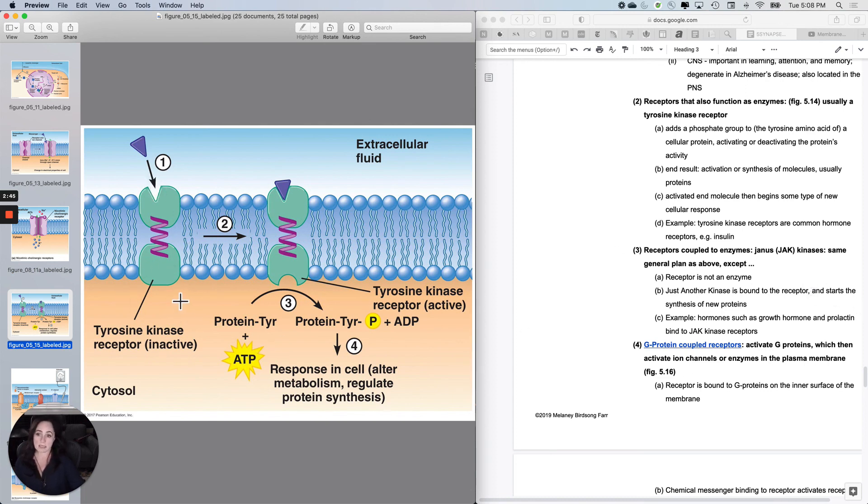In the JAK kinases, but it's bound to it. So it looks very much like this, only two separate proteins instead of bound proteins. And these are called JAK kinase receptors, and they're super duper common. They kind of do the same thing, except it's not tyrosine. Growth hormone, prolactin, those work that way.